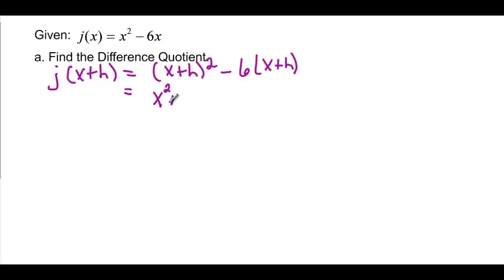And that's going to be equal to, this is always, x squared plus 2xh plus h squared. Minus, and then I distribute, so 6x and minus 6h. Got to watch your signs.